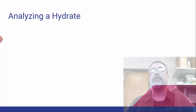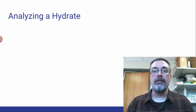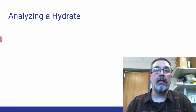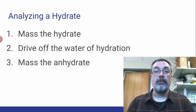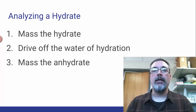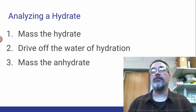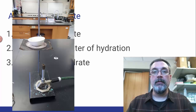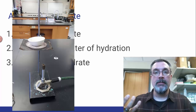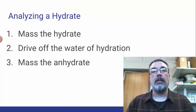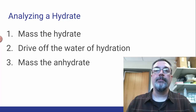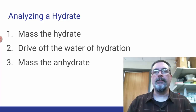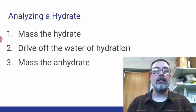How do we analyze a hydrate? It's very simple. We need to figure out how much water is in there — how much water is trapped. First, we mass the hydrate, so we figure out how much we're starting with. Then we drive off the water of hydration by heating it, causing the water to turn to water vapor and escape. Then we mass the anhydrate that's left. The difference in the masses of the two is how much water there was. Then you do the appropriate calculations to figure out how many moles of water per mole of anhydrate there was.